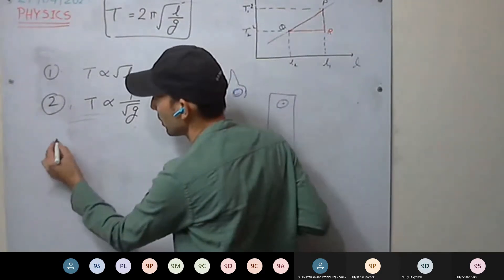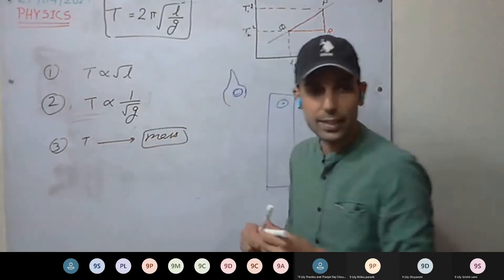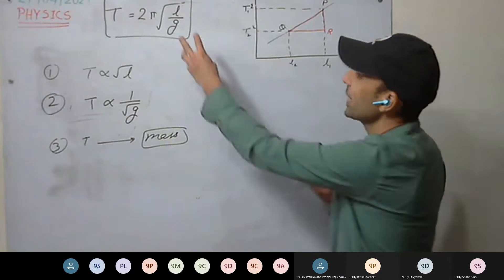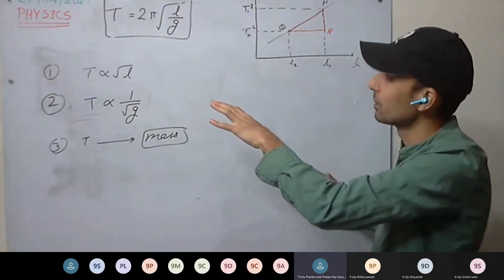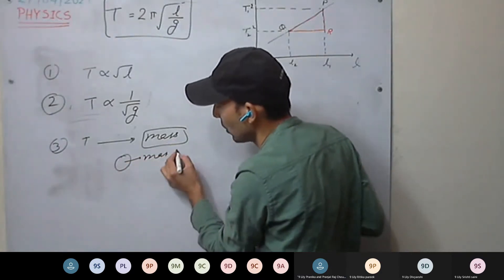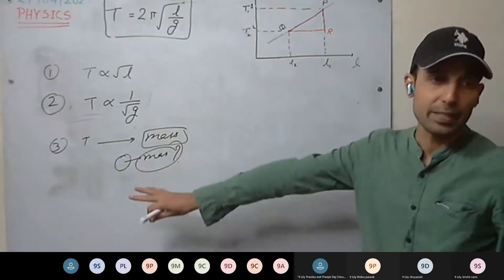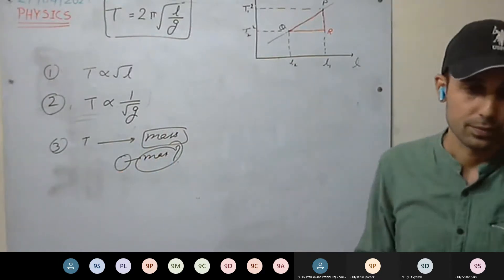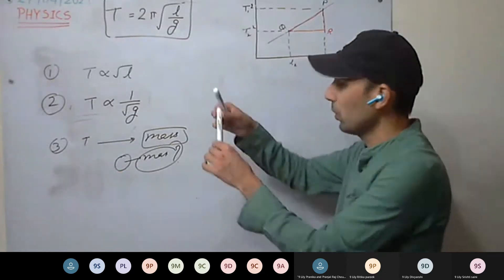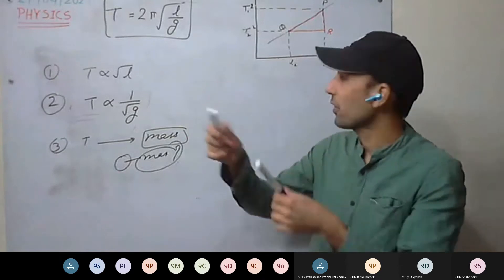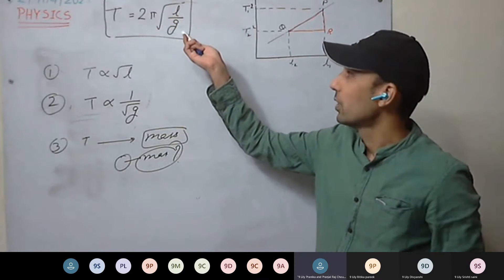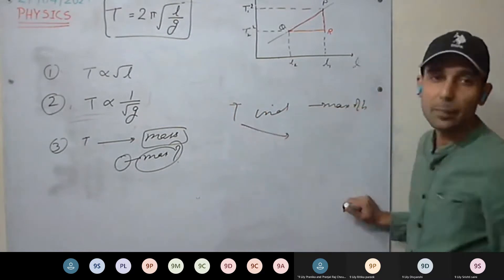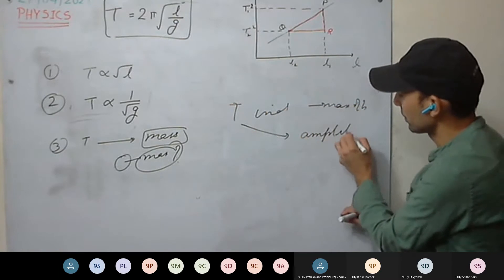How does time period vary with mass of the bob? It does not vary. There is no mass term in the equation T = 2π√(L/G). Whatever mass of the bob we take, time period remains the same. Mass of the bob has no effect on time period. Similarly, there is no amplitude term, so time period is also independent of amplitude of oscillation.